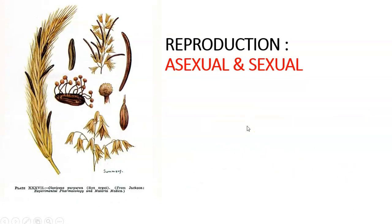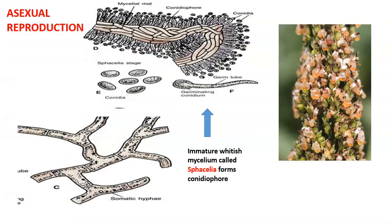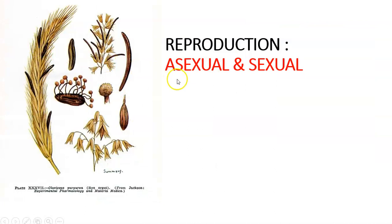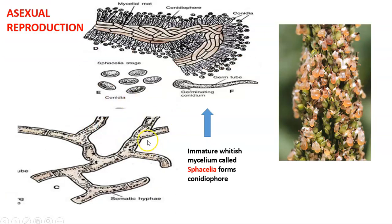Moving to reproduction — both asexual and sexual. As part of asexual reproduction, the sphacelium is the whitish mycelium that affects the ovary of the host plant. One conidium falls onto the stigma of the grain's flower; at the stigma the conidium germinates, moves through the style as a germ tube, and then infects the ovary. That is the mode of operation of asexual reproduction.